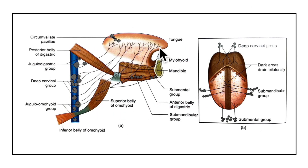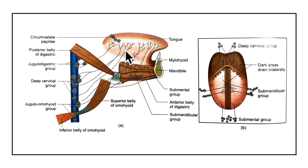The tip of the tongue drains bilaterally into the submental nodes. The right and left halves of the remaining anterior two-thirds of the tongue drain unilaterally to the submandibular nodes. The posterior-most part and posterior one-third of the tongue drain bilaterally into the upper deep cervical group of lymph nodes, including the jugulodigastric nodes. The whole lymph finally drains into the jugulo-omohyoid group of lymph nodes, known as the lymph nodes of the tongue.